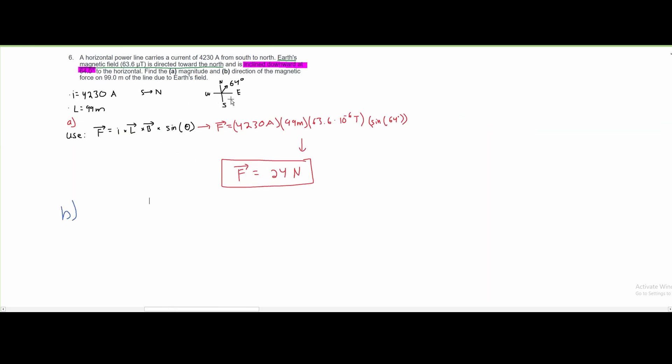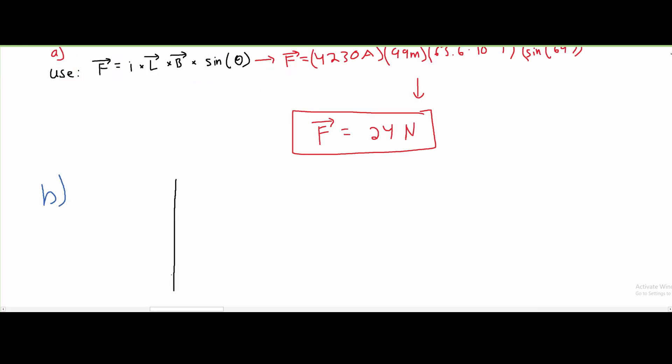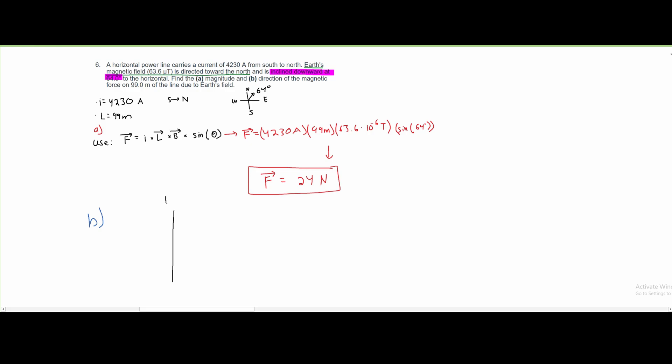For part B, we are asked to find the direction of the magnetic force on 99 meters of the line due to Earth's field. For this, we can look at this graph here and make it a little bit more 3D. We're going to have our original graph like this, or the y-axis like this. And we're going to have our north and our south values. However, our west and east values are going to be drawn at a slight angle like this. And we can draw a line through the center just to show that it is 3D.